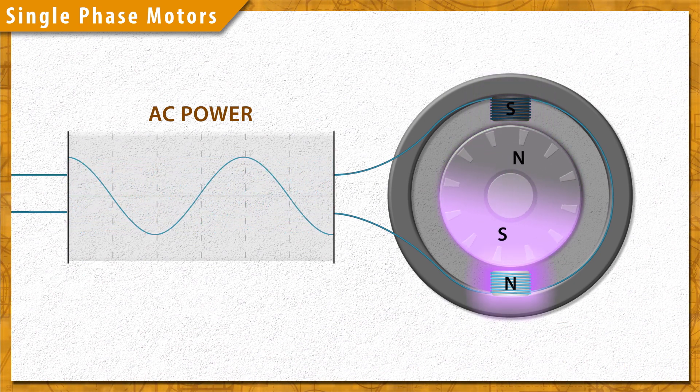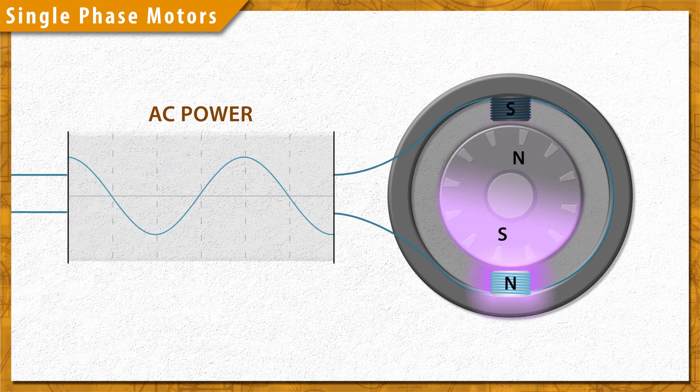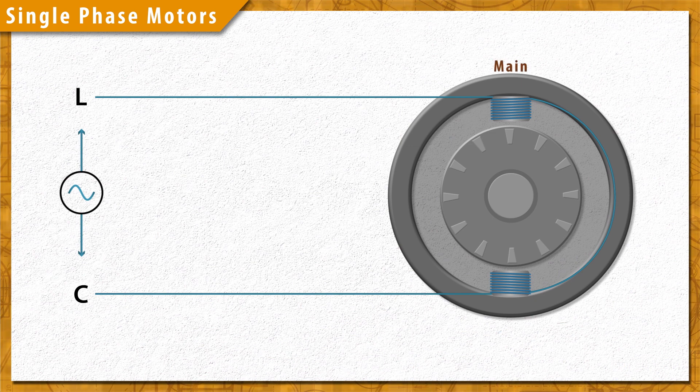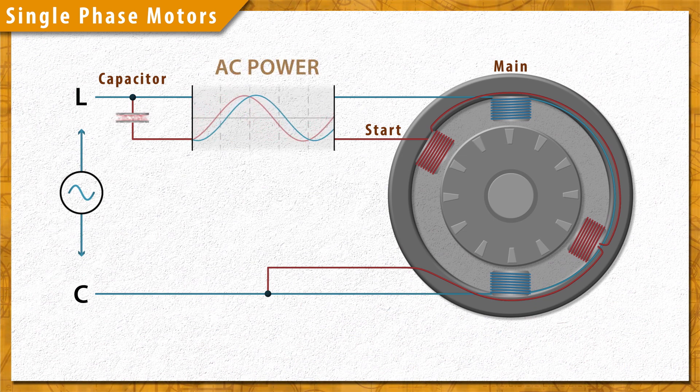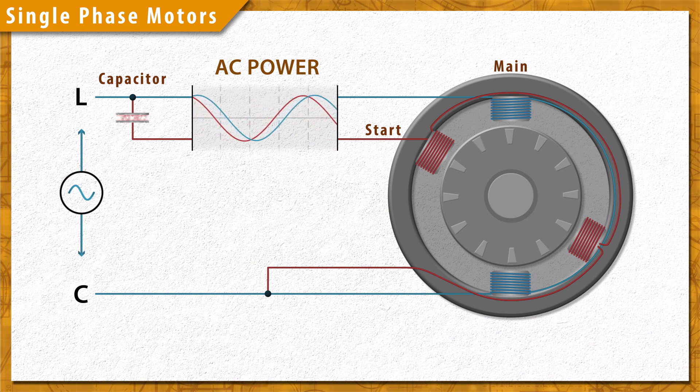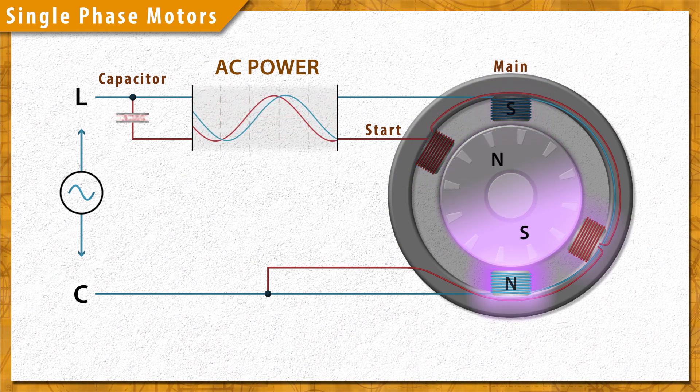To become self-starting, a single phase motor needs to create a rotating magnetic field. This is commonly done by adding an auxiliary winding or start winding which is then connected to a capacitor. Capacitors store electrical energy. As an electrical charge builds and releases between the dielectric plates, the voltage will be delayed slightly as it lags behind the charging current. This creates a magnetic phase shift in the start winding providing the torque needed to turn the rotor.